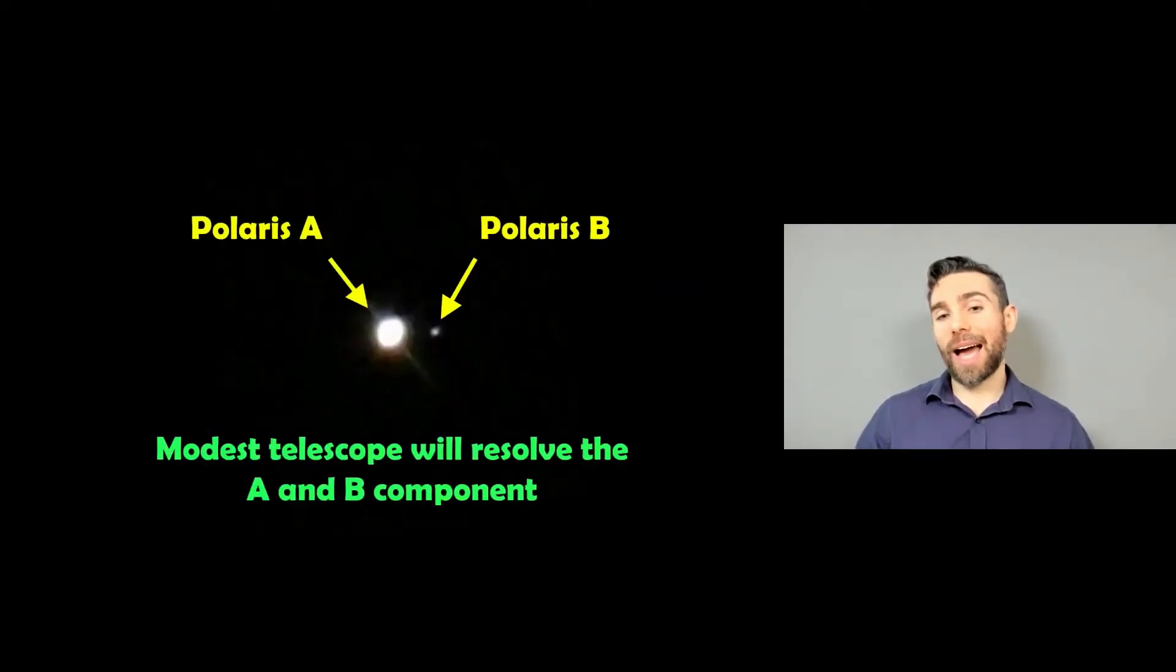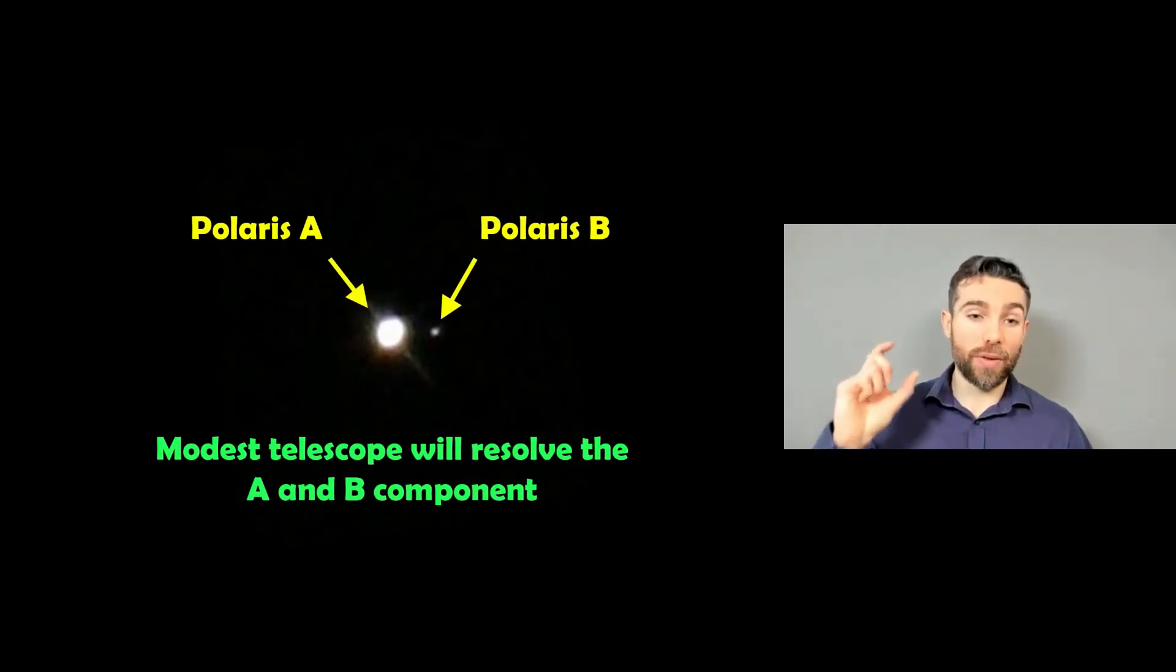So can we actually see them? Well, Polaris A and Polaris B, you can resolve with a fairly modest telescope. You don't need really powerful telescopes to see these. So if you've got a telescope at home, go find the North Star, point it at Polaris, and you should be able to resolve that second smaller Polaris B. You don't need a big telescope for this. You can easily see this with a fairly small telescope.